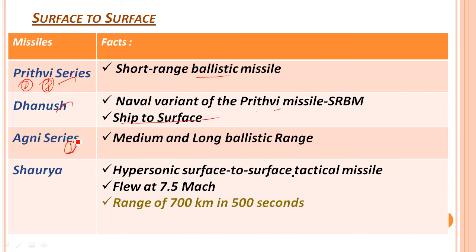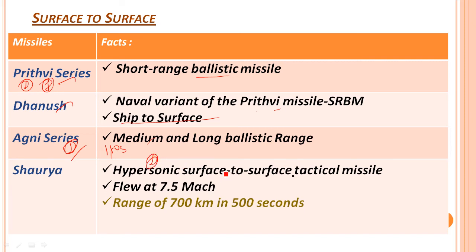This is the Agni series — a medium and long range ballistic missile series. It includes Agni 1, Agni 2, and Agni 3. The Prithvi series is also a very important series. The Agni series is a medium and long range ballistic missile. The second missile is Shaurya — a hypersonic surface-to-surface missile at Mach 7.5.